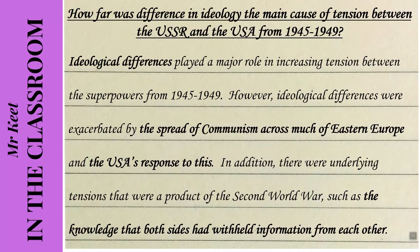Here I've dealt with the key factors in the essay, and I've used the words of the question. Ideological differences — the thing I'm starting off with. I've talked about the spread of communism, another factor. The USA's response to this, the third factor. And the fourth one — the fact that both sides withheld knowledge from each other during the Second World War. In red, I've highlighted words which show my line of argument: the fact that ideological differences played a big role — a major role — in increasing tension. They were exacerbated, made worse, by the spread of communism. And there was also an underlying factor. So this is showing the reader what I'm going to be arguing in my essay, and coming in at a really strong angle of attack from the very beginning.